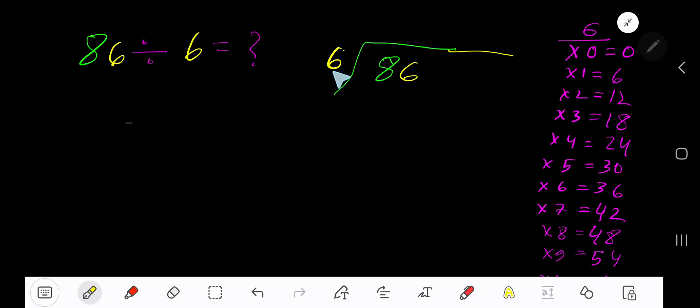86 divided by 6. Here 6 is the divisor, so we need the multiplication table of 6. 6 times 0 is 0, 6 times 1 is 6, 6 times 2 is 12, 6 times 3 is 18.